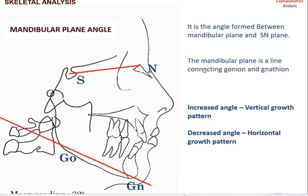The last angle under skeletal analysis is the mandibular plane angle, formed between the mandibular plane and the SN plane. The mandibular plane connects gonion to gnathion. An increased angle indicates a vertical growth pattern, also known as a high angle, and can be clinically seen as open bite. A decreased or low angle represents a horizontal growth pattern, which can be clinically seen as a deep bite.